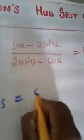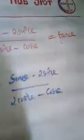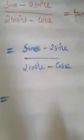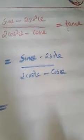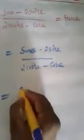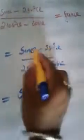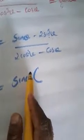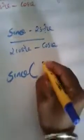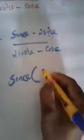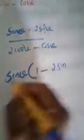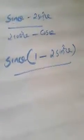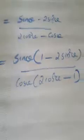Let us start from LHS as always. LHS is sin theta minus 2 sin cubed theta divided by 2 cos cubed theta minus cos theta. Looking at the numerator and denominator — they contain only sin and cos. In the numerator, sin theta is common in both terms. In the denominator, cos theta is common in both terms. So take sin theta outside from the numerator and cos theta outside from the denominator. From the numerator: 1 minus 2 sin squared theta remains. From the denominator: 2 cos squared theta minus 1 remains.